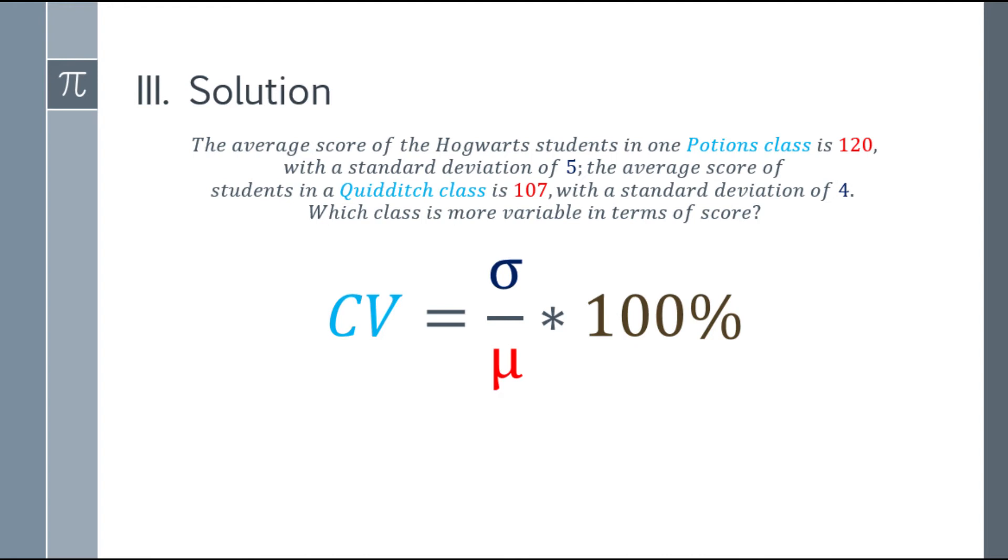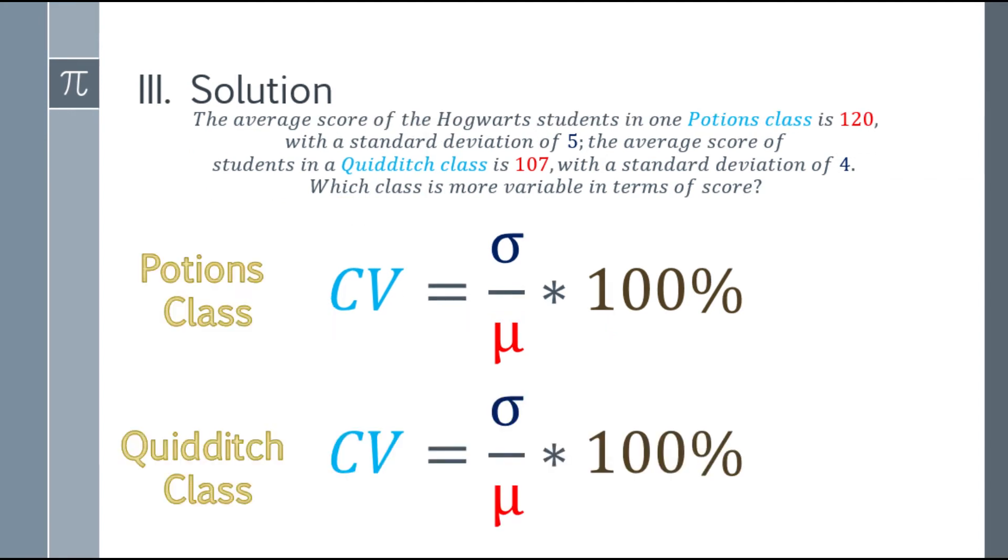So for the solution, write down the formula immediately. Since we're using population, we have to use this one. Either way works. They're the same, the only difference is that one is for population and one is for sample. Next, let's write down the two classes we're going to compare. First is the Potions class and the Quidditch class. Same formula.